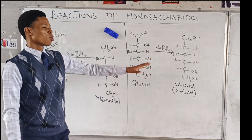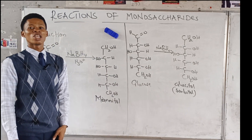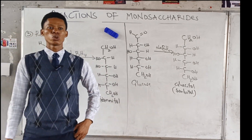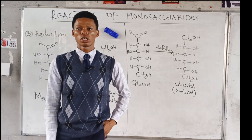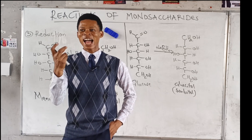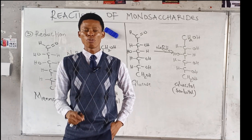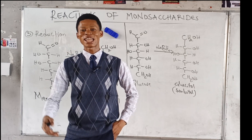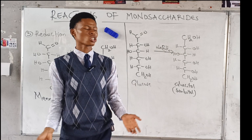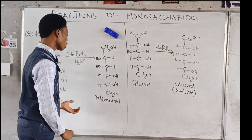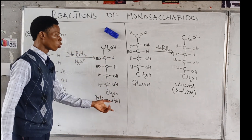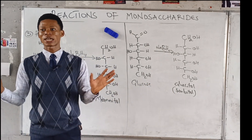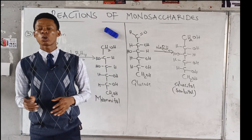If galactose undergoes reduction, the alditol formed would be galactitol — just like we have mannitol and sorbitol, we have galactitol.